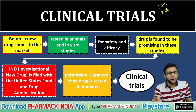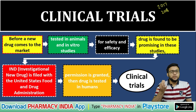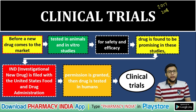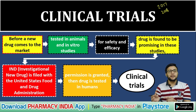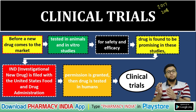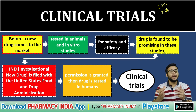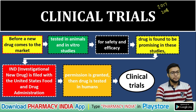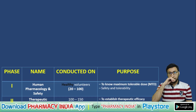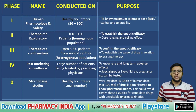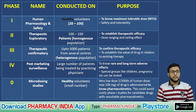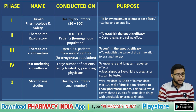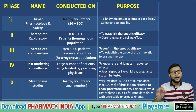The clinical trial is conducted in several phases. Let us now discuss each phase — what happens in each phase, why it is conducted, and how many humans are involved. A nice summary table has been provided covering all the phases.